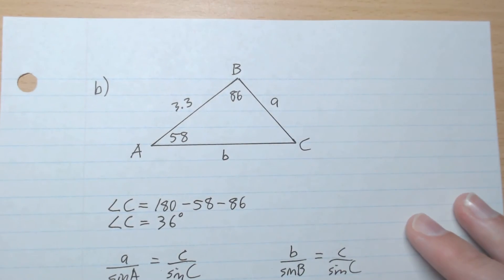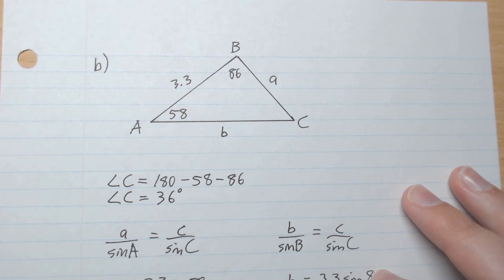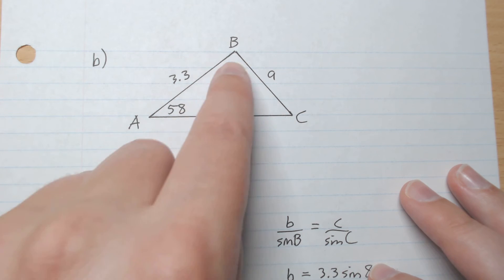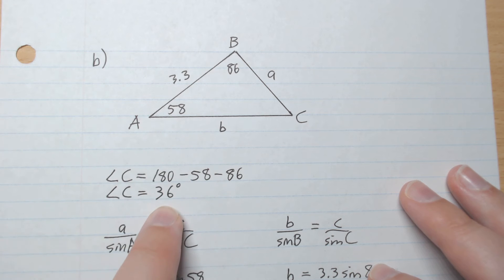Another example. So here we have two of the angles, so we can get the third one. 180 minus 86 minus 58 gives 36 for angle C.